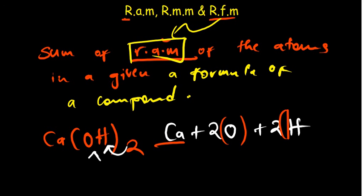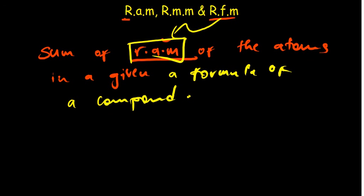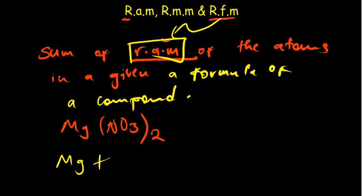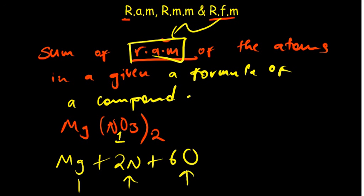One more example: magnesium nitrate Mg(NO₃)₂. Students often make mistakes here. You have 1 magnesium, then 2 nitrogens (from the subscript 2 outside the bracket), and 2 × 3 = 6 oxygen atoms. Substitute the relative atomic masses from the periodic table and add them all up — what you get is the relative formula mass of magnesium nitrate. So now you should understand what relative atomic mass, relative molecular mass, and relative formula mass are.